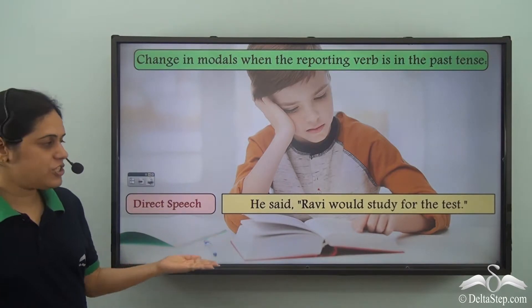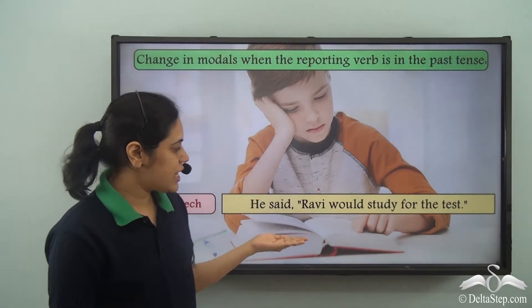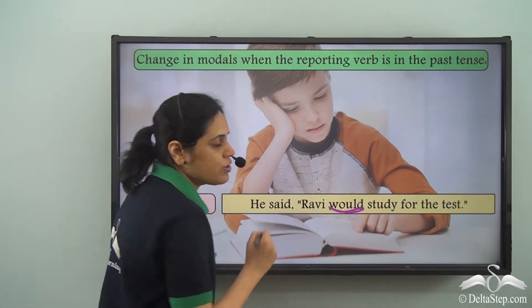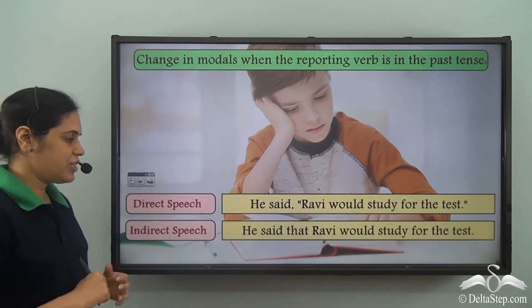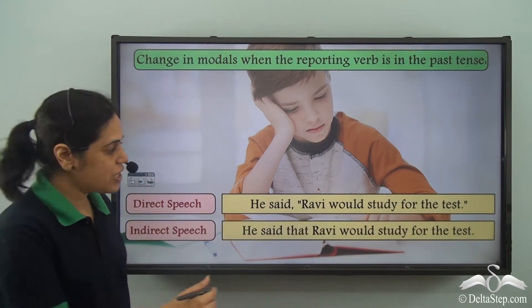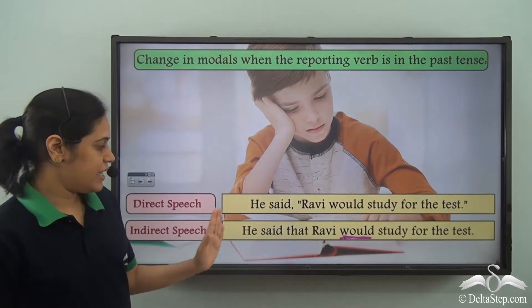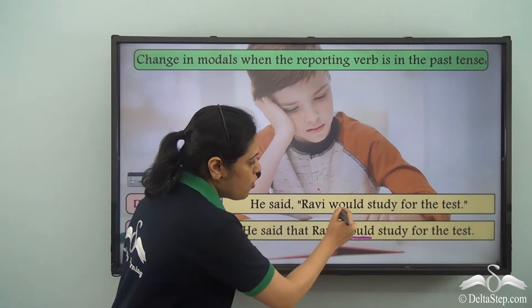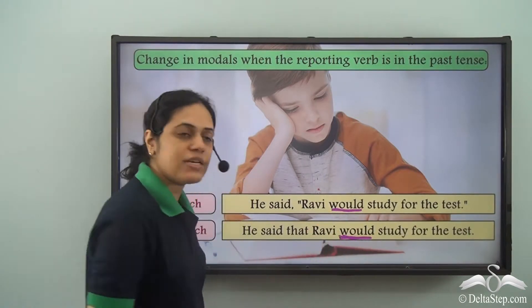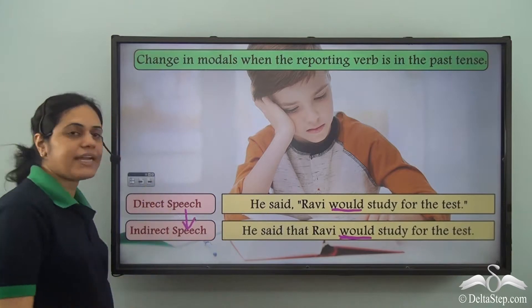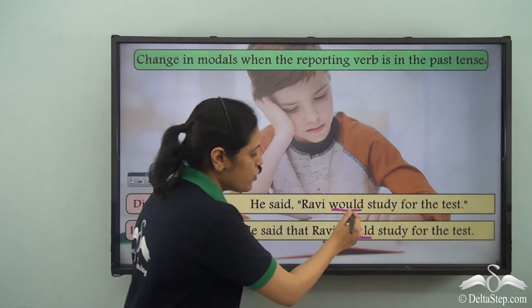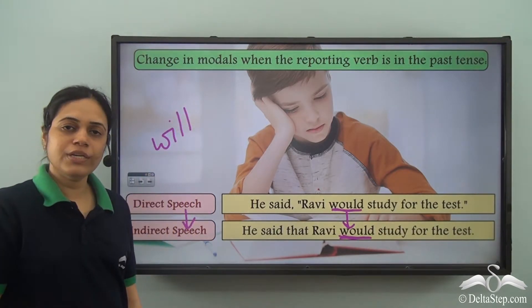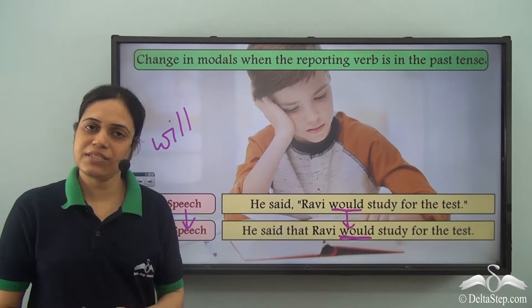'He said Ravi would study for the test.' Here 'would' is the modal. When changed to indirect speech, it remains the same: 'He said that Ravi would study for the test.' So 'would' remains 'would' in indirect speech. To summarize: 'will' changes to 'would', but 'would' remains the same.